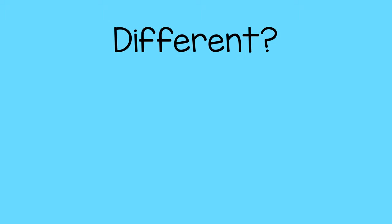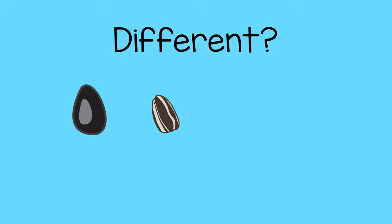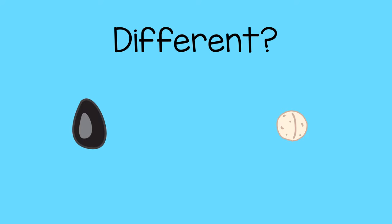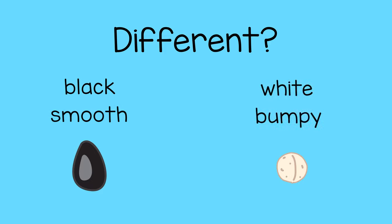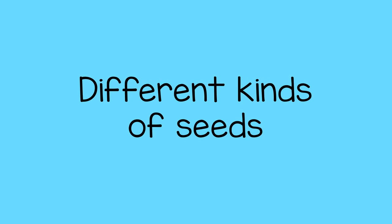Then you can ask, how are they different? And talk about their colors, sizes, shapes, and textures. For example, the child might say, this seed is black and smooth, but that one is white and bumpy. This helps them learn what seeds are and that there are many different kinds.